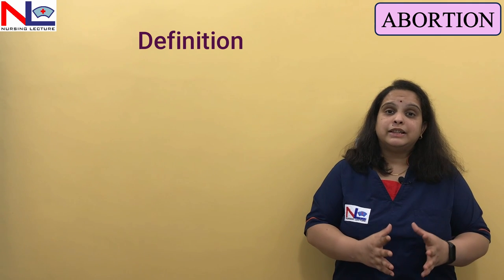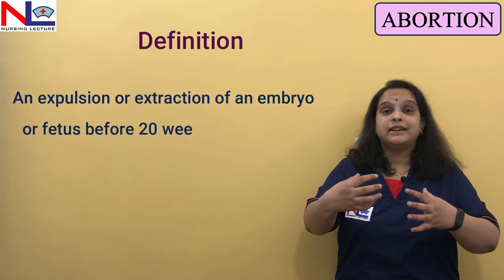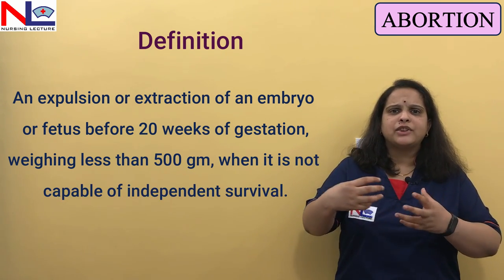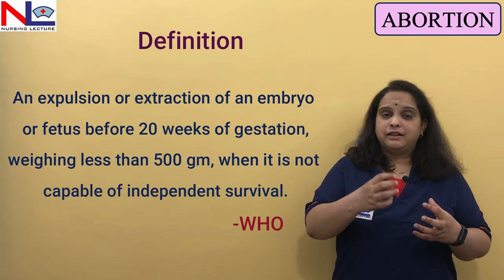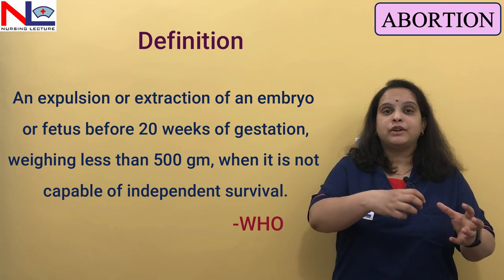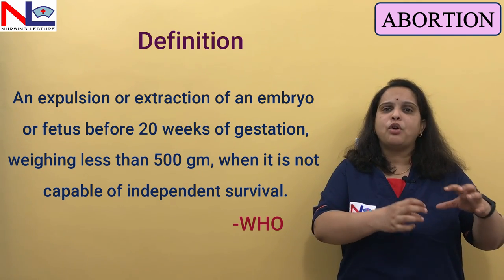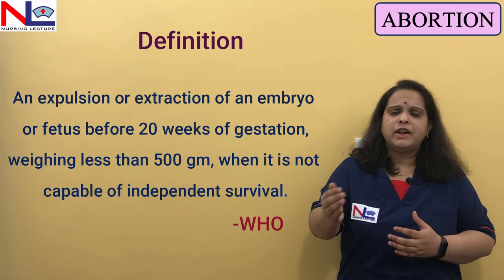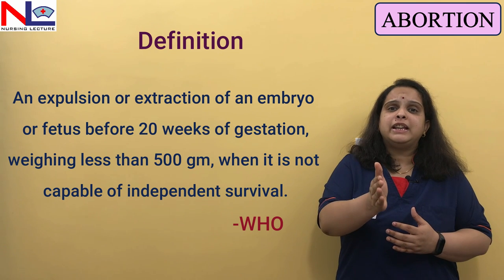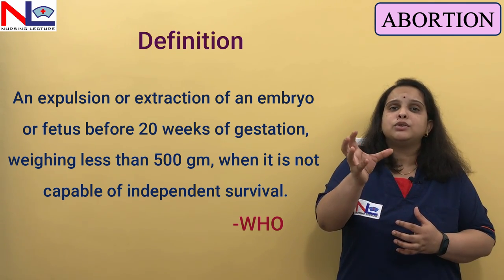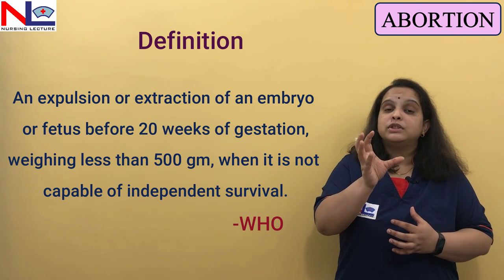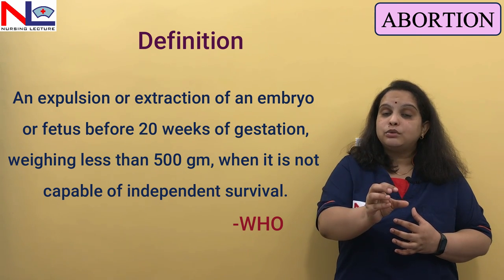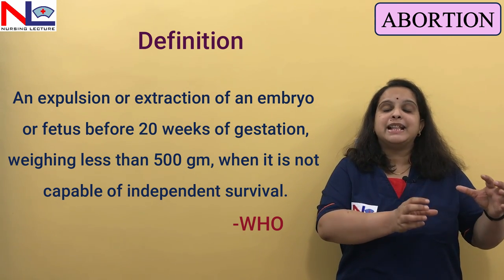What is abortion? It is the expulsion or extraction of a fetus or embryo. Expulsion means it comes out spontaneously, while extraction means we are deliberately using tools to make the fetus or embryo come out. This occurs before 20 weeks of gestation, because before 20 weeks the fetus or embryo is not capable of surviving independently. The fetus or embryo must weigh less than 500 grams.